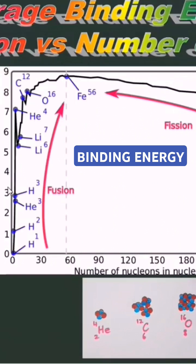Less massive nucleons, up to iron, participate in fusion reactions, whereas nucleons more massive than iron participate in fission reactions, as we can see from this graph.